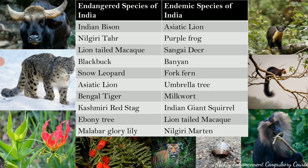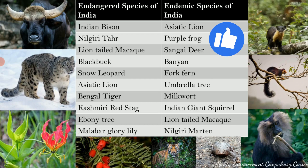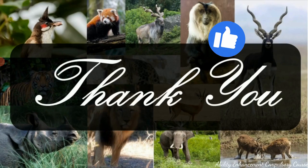India also has many endemic species — some overlapping with the endangered list — that are limited to the Indian subcontinent. Examples of endemic animals include the Nilgiri martin, Indian giant squirrel, lion-tailed macaque, purple frog, and Bengal tiger. Endemic plants include the banyan tree, umbrella tree, milkwort, and fork fern — all species endemic to the Indian subcontinent.